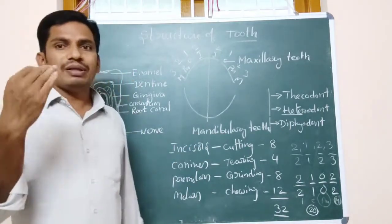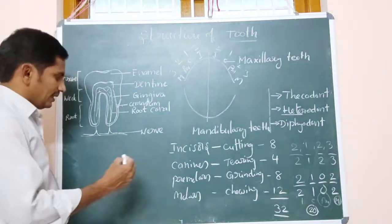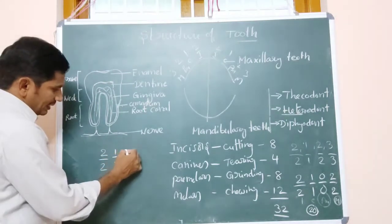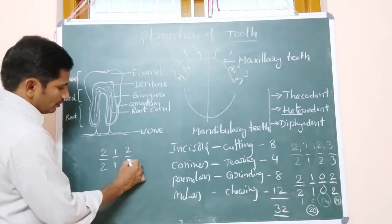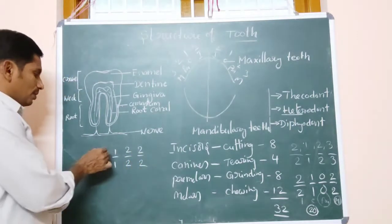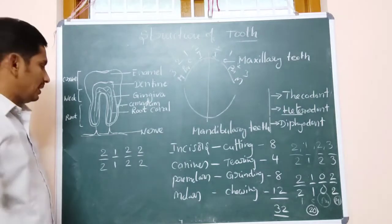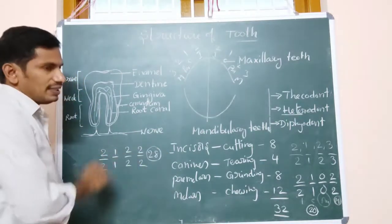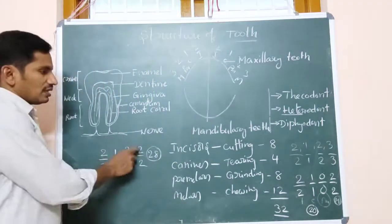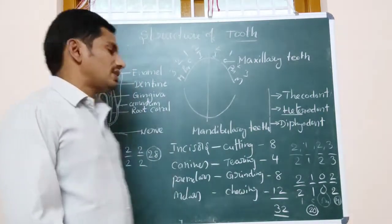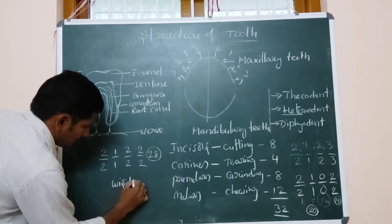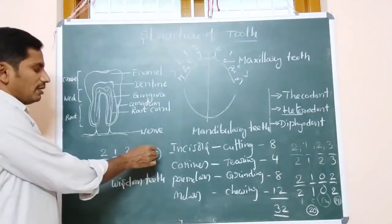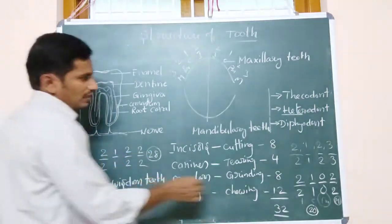Below age 18, people do not have the third molars. The dental formula becomes 2/2, 1/1, 2/2, 2/2, giving 7 per half, so 7 into 4 equals 28 teeth. The third molars appear around 20 years of age and are known as wisdom teeth. So below 18, the dental formula gives 28 teeth.